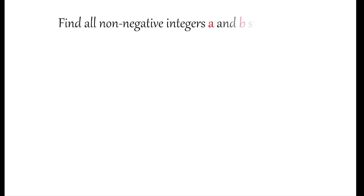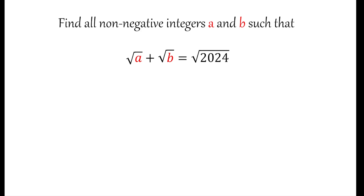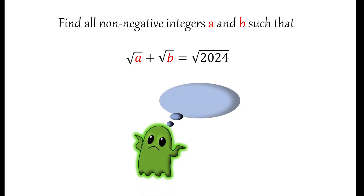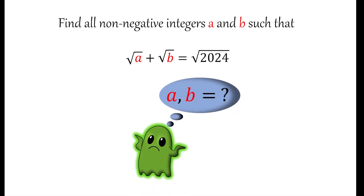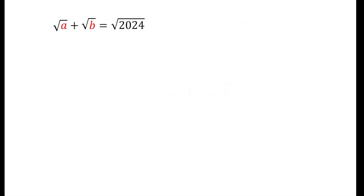In today's problem we are trying to find all non-negative integers a and b such that square root of a plus square root of b is equal to square root of 2024. This problem is from the Poland Math Olympiad 2024, and I strongly encourage you to try it out for yourself and then come back and check your solutions. Let's try to solve this particular problem.